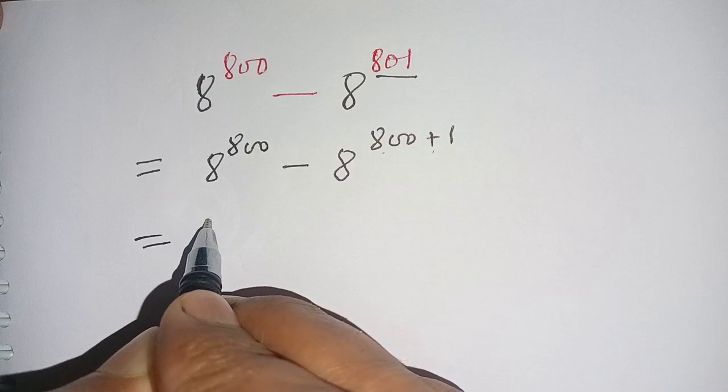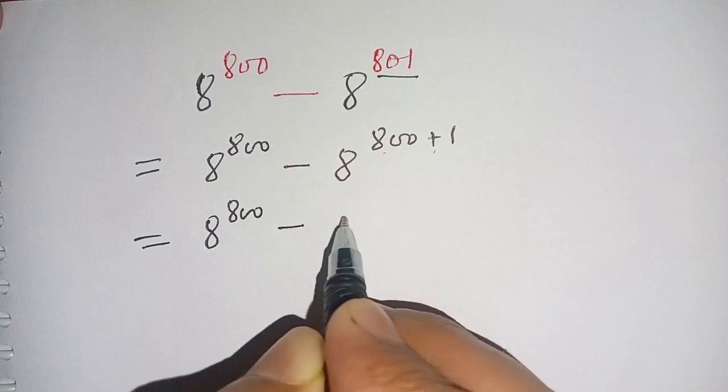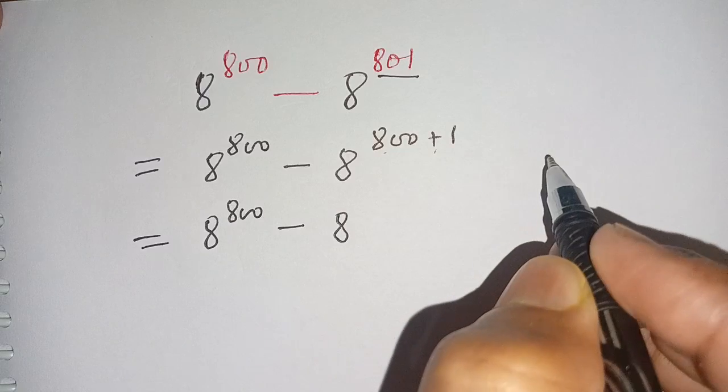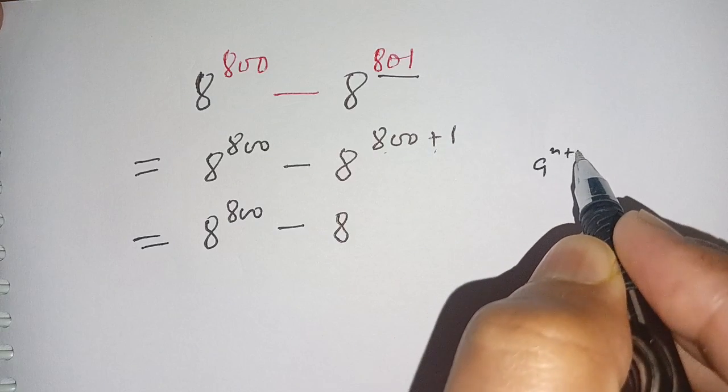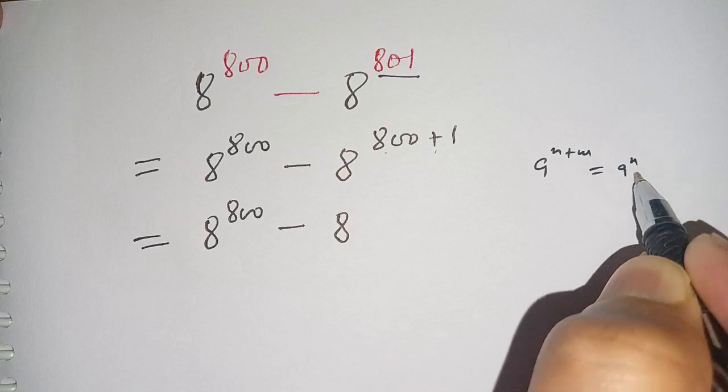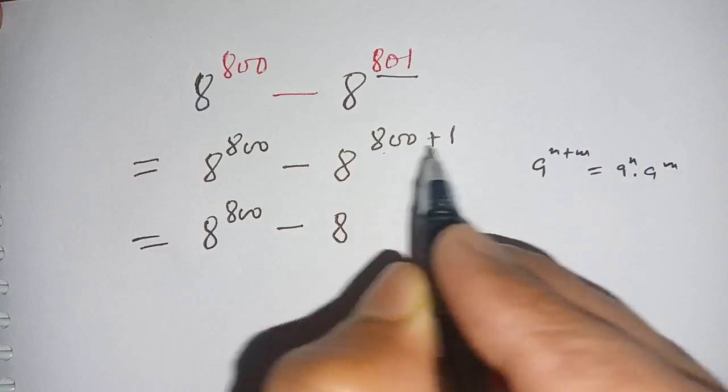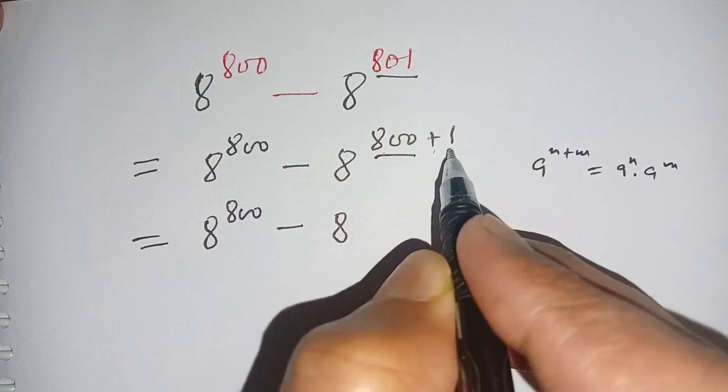On the next step we write this as 8 power 800 minus 8 power 800 plus 1. We know that if a power n plus m equals a power n times a power m. Here n is 800 and m is 1.